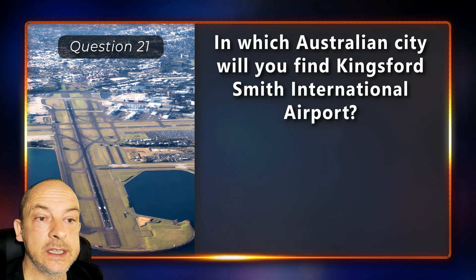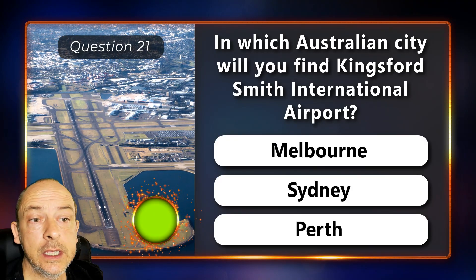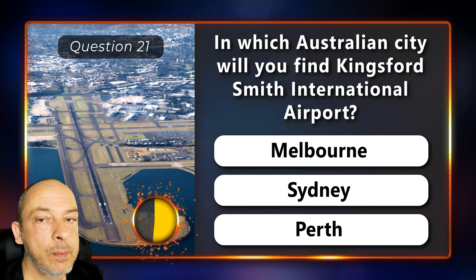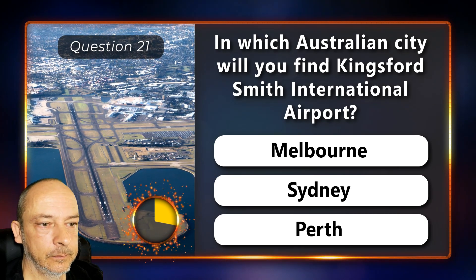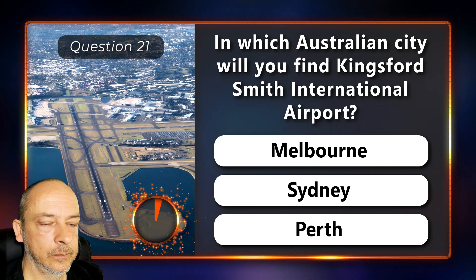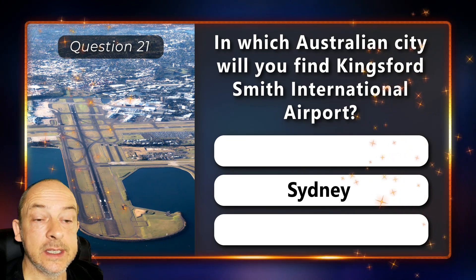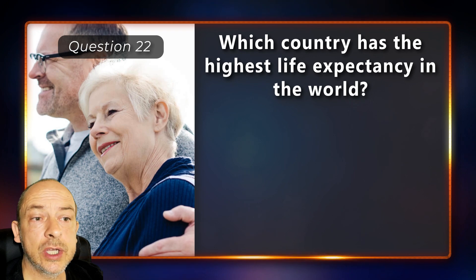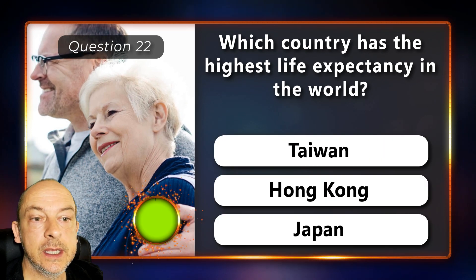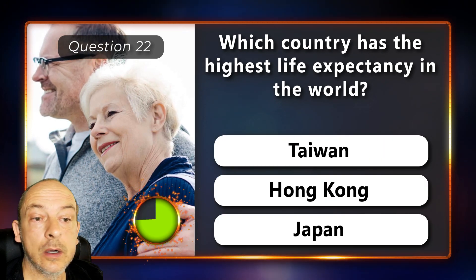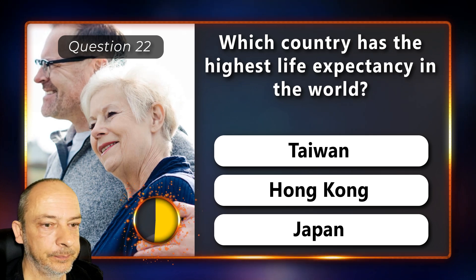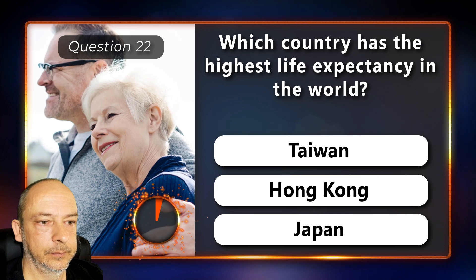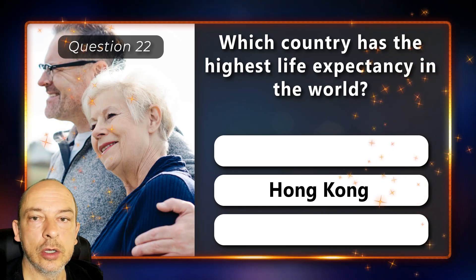In which Australian city will you find the Kingsford Smith International Airport — in Melbourne, Sydney, or Perth? It's located in Sydney. Which country has the highest life expectancy in the world — is it Taiwan, Hong Kong, or Japan? It is Hong Kong.